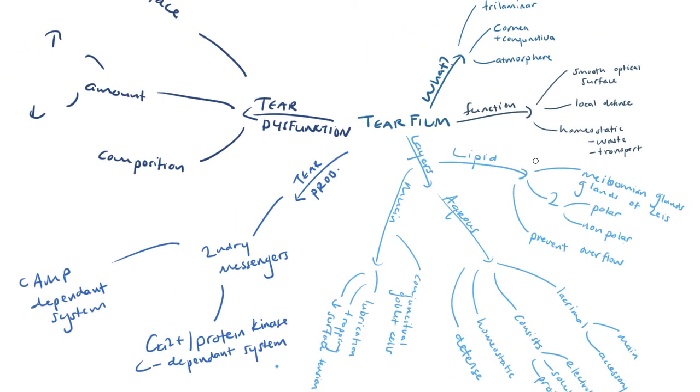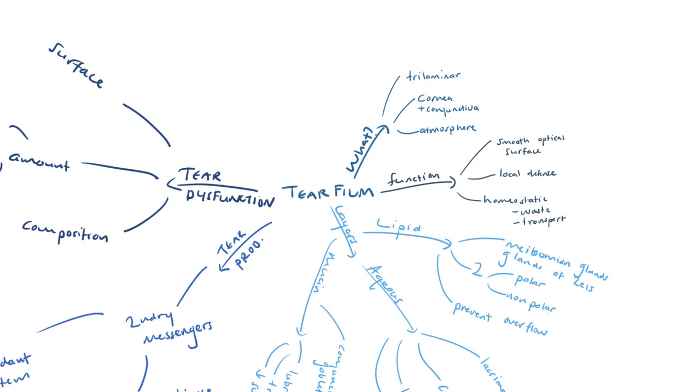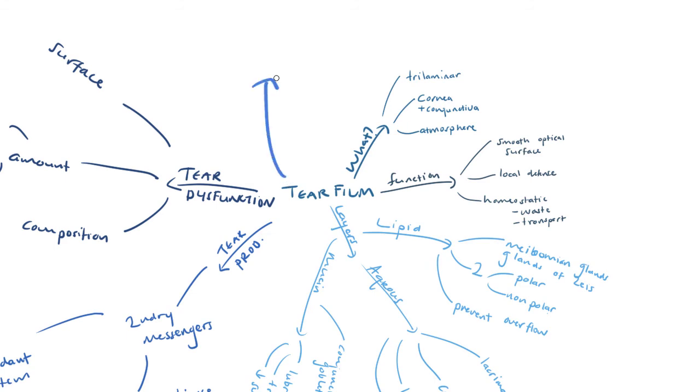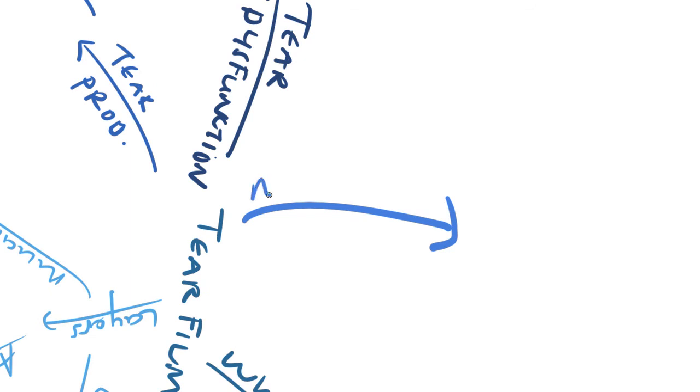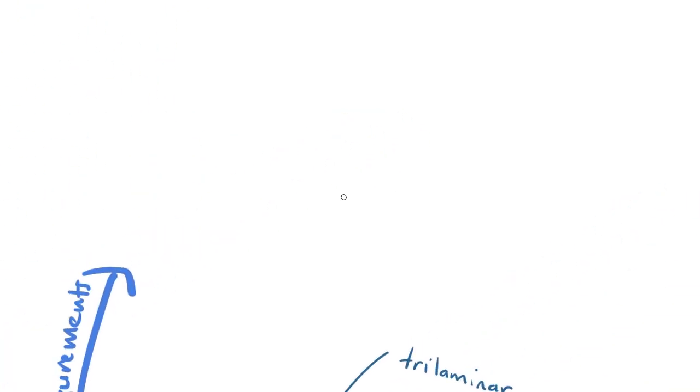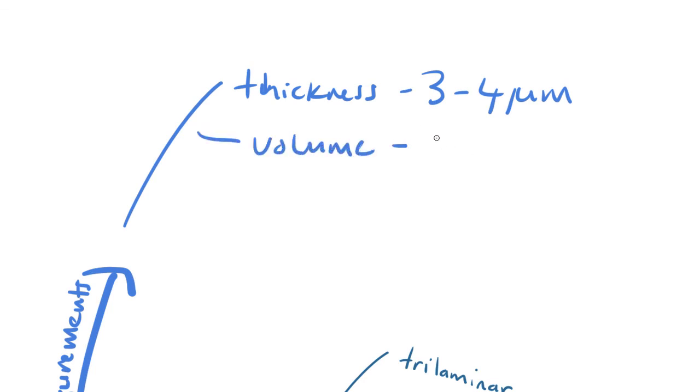So we've actually done quite a lot in terms of the tear film. Just to end off this lecture, I'm just going to touch on a few important measurements and indices that are important when we consider the tear film. So let me just zoom in here a little bit. So we're looking at measurements. Okay, so when we're thinking about the tear film, we talk about its thickness, the thickness of the tear film. And that varies from about 3 to 4 micrometers thick. The volume of the tear film is usually about 7 to 8 microliters.